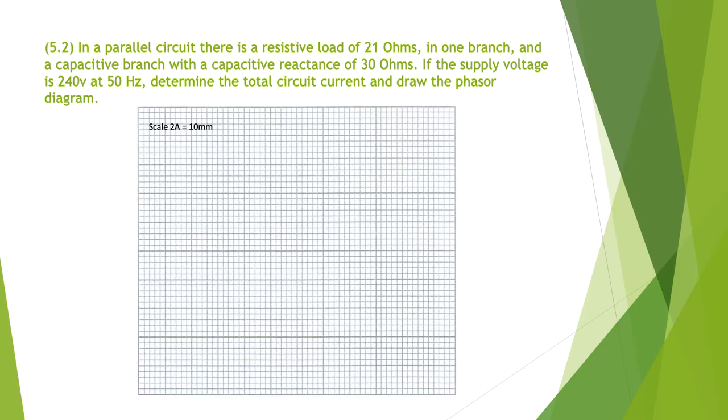5.2 in a parallel circuit. There is a resistive load of 21 ohms in one branch and a capacitive branch with a capacitive reactance of 30 ohms. If the supply voltage is 240 volts at 50 hertz, determine the total current drawn. This time my scale is 2 amps equals 10 millimeters. First stage is to put in the voltage reference and the current for the resistor.